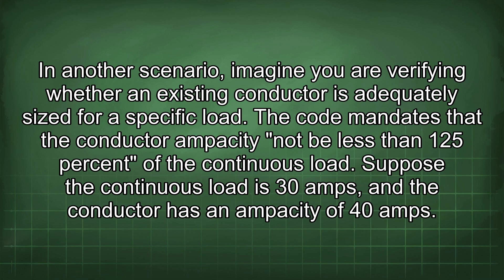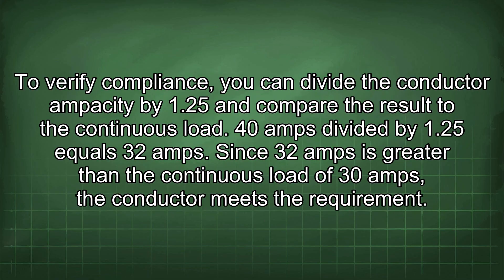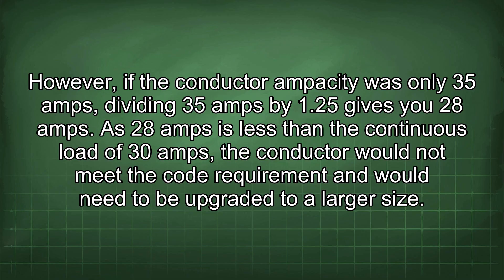In another scenario, imagine you are verifying whether an existing conductor is adequately sized for a specific load. The code mandates that the conductor ampacity not be less than 125% of the continuous load. Suppose the continuous load is 30 amps and the conductor has an ampacity of 40 amps. To verify compliance, divide the conductor ampacity by 1.25: 40 ÷ 1.25 = 32 amps. Since 32 amps is greater than 30 amps, the conductor meets the requirement. However, if the conductor ampacity was only 35 amps, 35 ÷ 1.25 = 28 amps, which is less than 30 amps, so it would not meet the code requirement and would need to be upgraded.